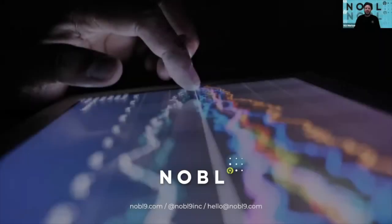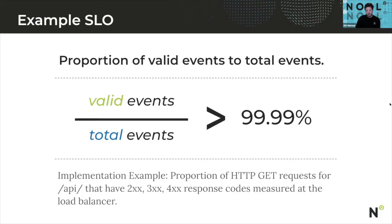Hi there, this is Kit Merker from Novo9, and I want to introduce you to the concept of service level objectives or SLOs. What is an SLO? It's a proportion. It takes some sort of event and says how many out of the total set of events were actually valid, and then compares that proportion to some percentage. We usually talk about that as a number of nines.